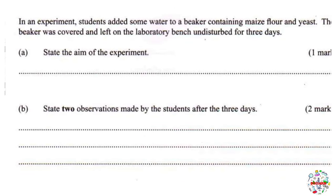Question 14: students added some water to a beaker containing maize flour and yeast. The beaker was covered and left on the laboratory bench undisturbed for three days. Part A: state the aim of the experiment. Whenever you see yeast with a substrate, this is probably respiration. The type of respiration that yeast cells carry out is anaerobic respiration. The aim of this experiment is to investigate anaerobic respiration — or fermentation, which would also be correct.